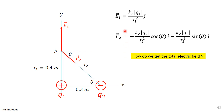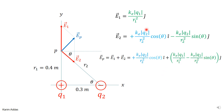Now we have E1 vector and E2 vector and want the total electric field at point P. By the principle of superposition, you add the electric fields as vectors — add the i components together and the j components together. E1 has no i component, so the total i component is ke|q2|/r2² cosine theta, and the j components add to give ke|q1|/r1² plus ke|q2|/r2² sine theta terms. Geometrically, this is the vector sum of E1 and E2.